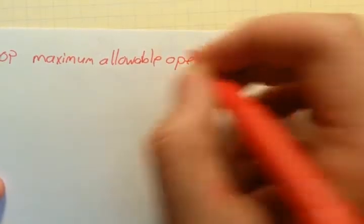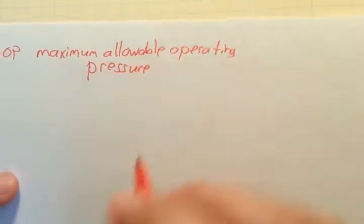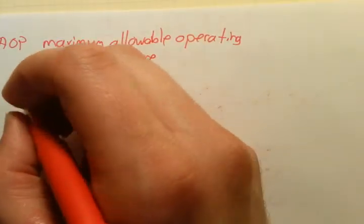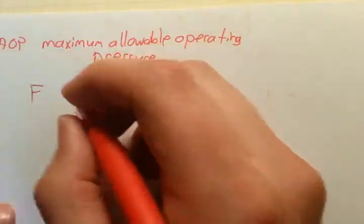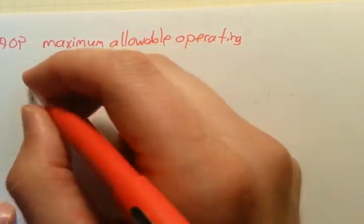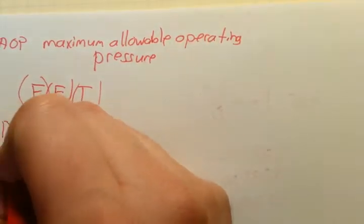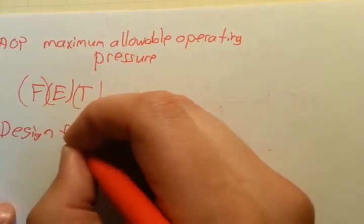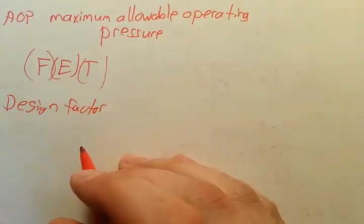So one is F, E, and T. F, they just call the design factor, which is based on where the pipeline is located.